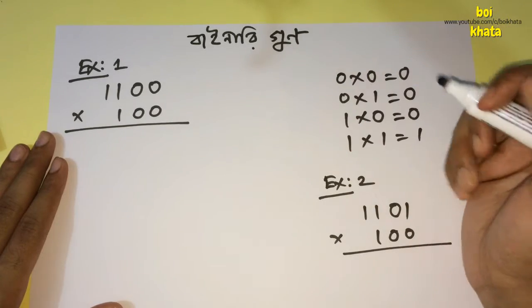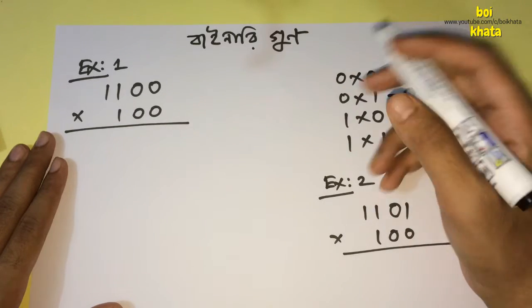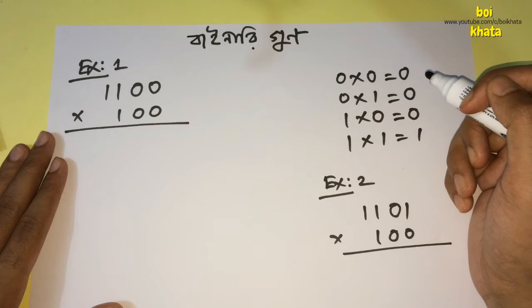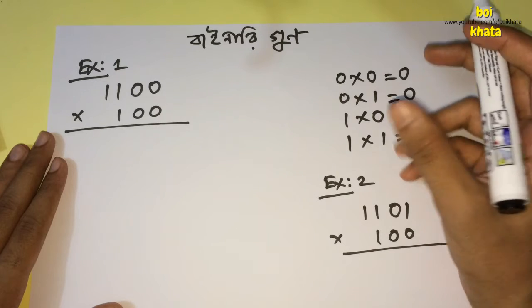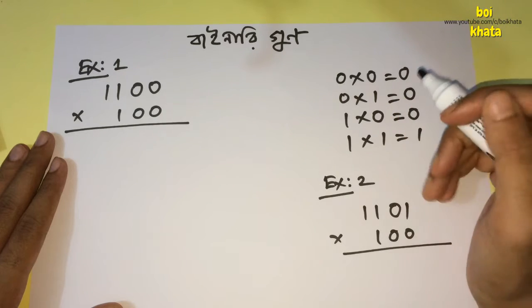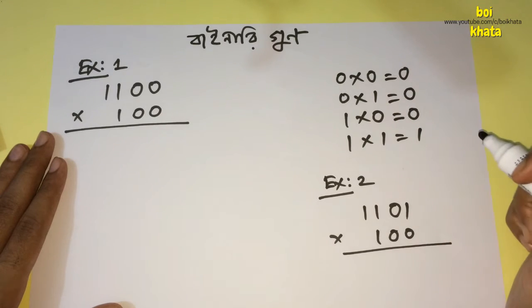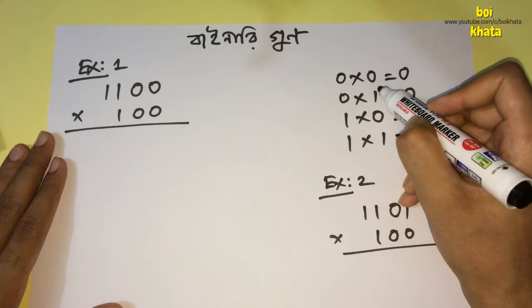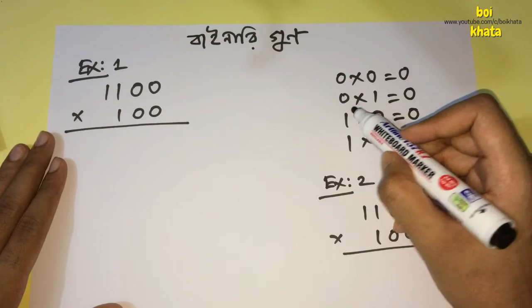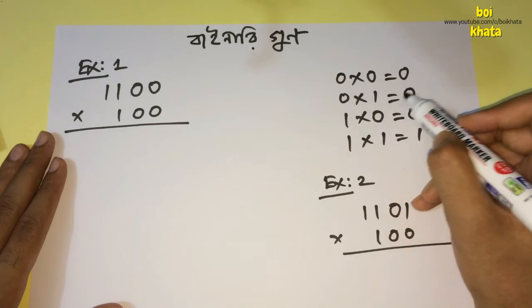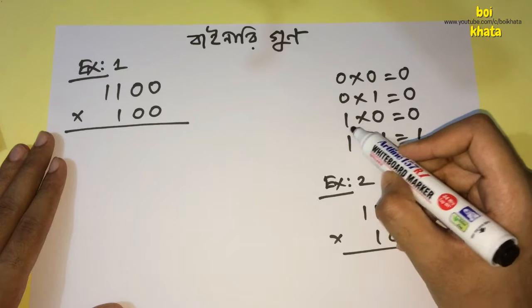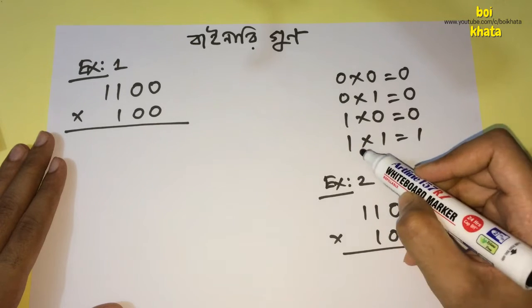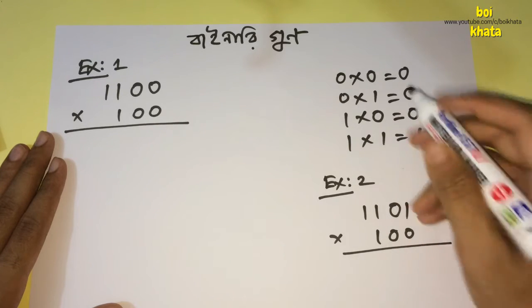Well, first let's begin with binary. Binary: 0×0 equals 0, 2×0 equals 0, 3×0 equals 0, and finally 1×1 equals 1.